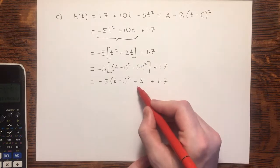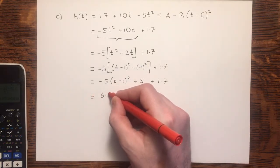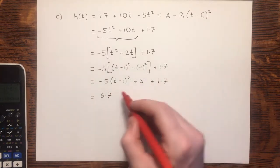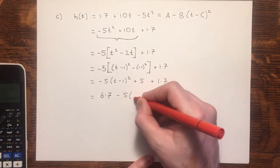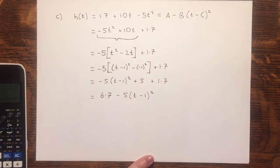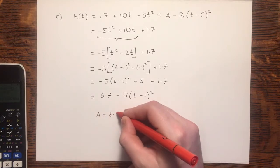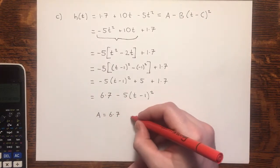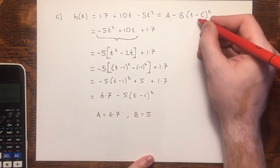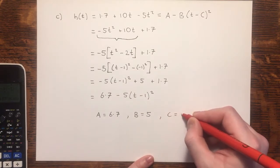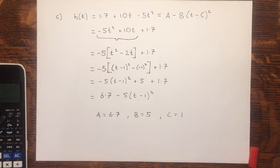They wanted a constant first, and my constant would be 6.7. Then, minus 5, t minus 1 squared. This is in the form that they wanted. A is equal to 6.7. Minus B minus 5. B must be equal to 5. Minus C minus 1. C equals 1. In part C, we were asked to find the constants A, B and C in that form there. And we had to calculate the values, which we've done. And now it's time to move on to part D.